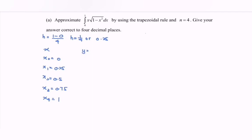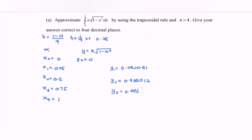Next we have the value for y, where the function is x multiplied with the square root of 1 minus x squared. By referring to the calculator, if we substitute x naught equal to 0, y naught is equal to 0. y₁ is 0.242061, y₂ is 0.4331012, y₃ is 0.496078, and y₄, substituting 1, gives 0. Summing the middle values, we have 1.171152.